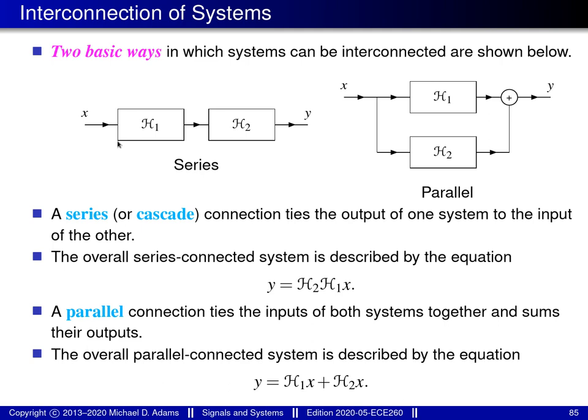We are taking our input signal x at the far left of this block diagram and feeding it into the system H1. So the output that is produced by the system H1 will correspond to this highlighted expression here. H1 of x is the output produced from the system H1 when the input is x.